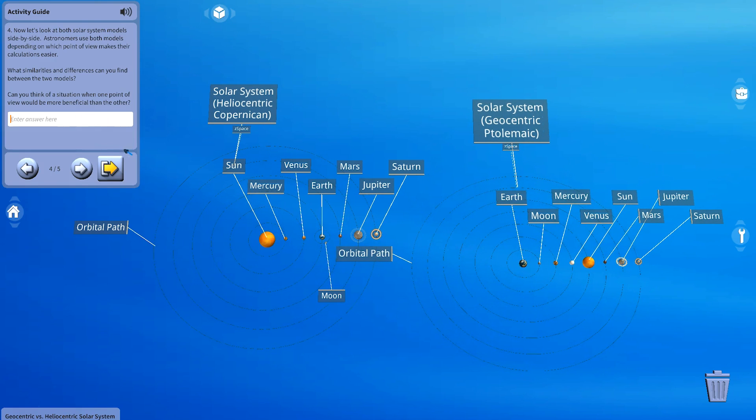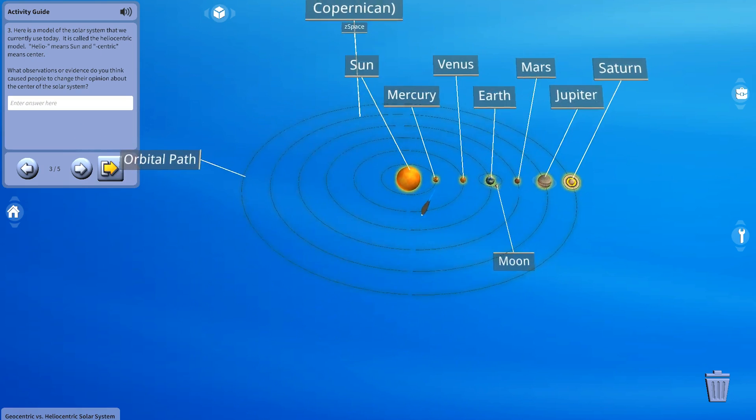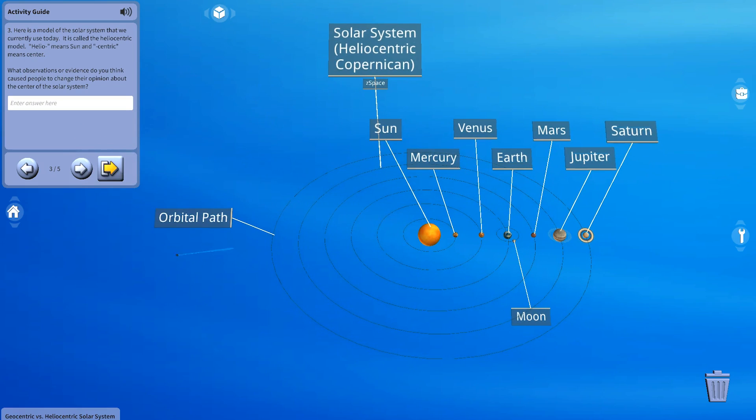In this activity, we'll be focusing on two different perceptions of the solar system: the geocentric model, developed by scientist and philosopher Claudius Ptolemy, and the heliocentric model, developed by astronomer Nicholas Copernicus.